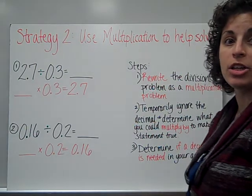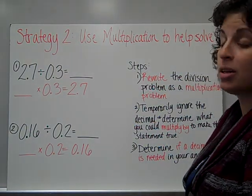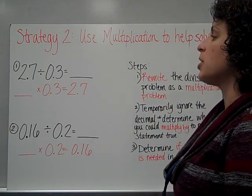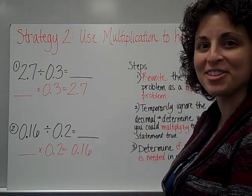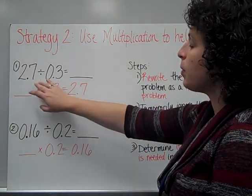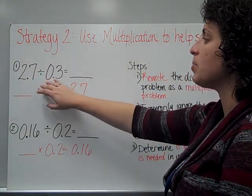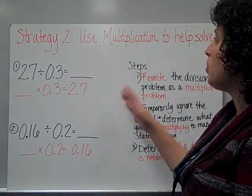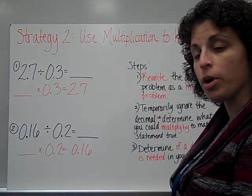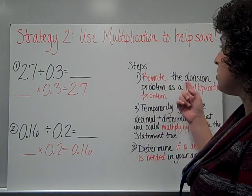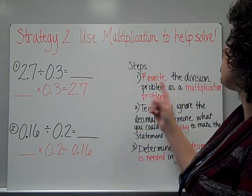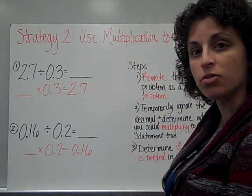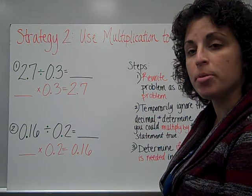Our next strategy is going to be to use multiplication to help us solve, because multiplication and division are opposites. There's something that we already know about multiplication that's going to help us. The problem is 2 and 7 tenths divided by 0 and 3 tenths. We could use a number line just like we did a moment ago, but this strategy also works. What I'm going to do is rewrite the problem as a multiplication problem. Multiplication and division are inverse or opposite operations.